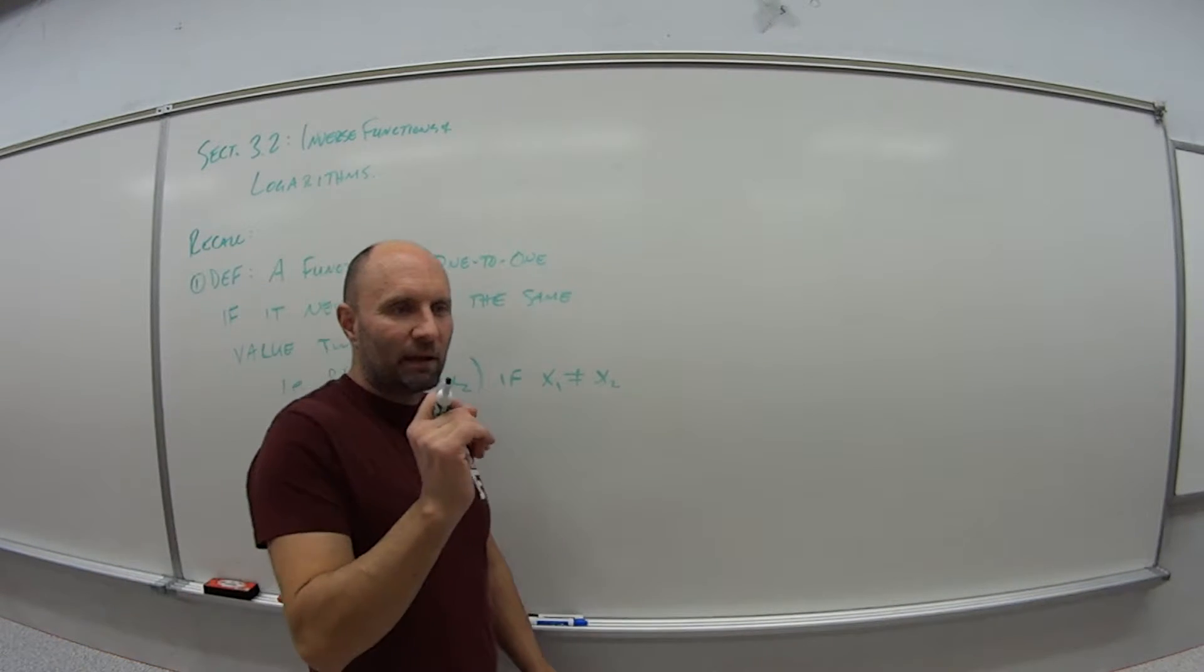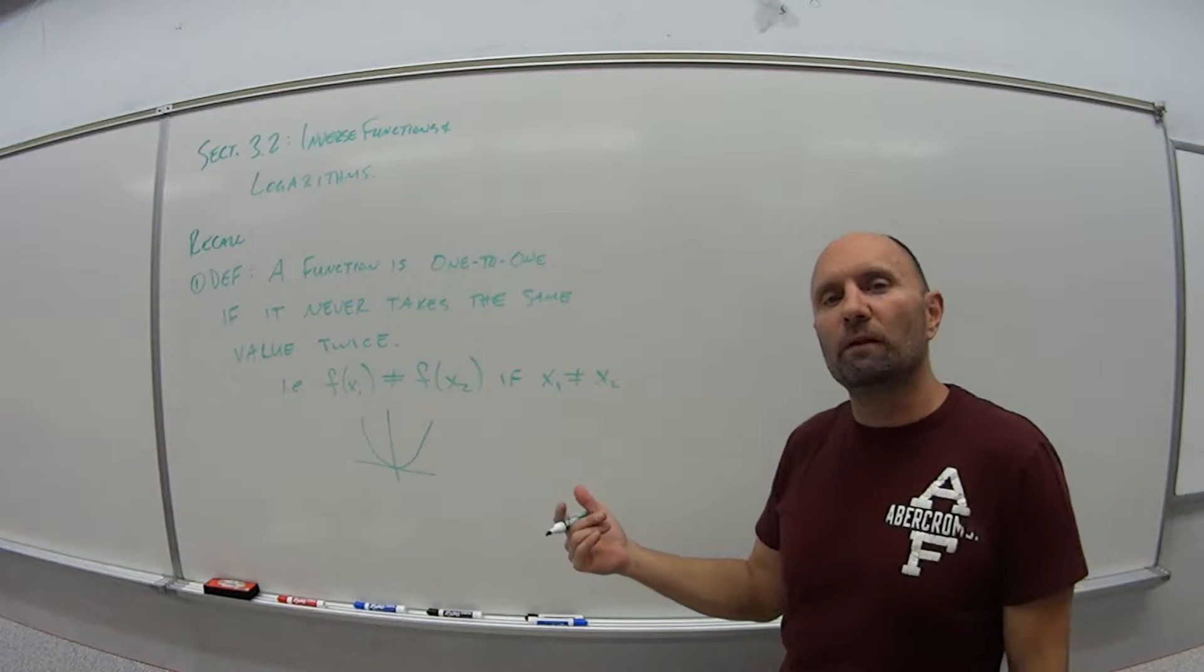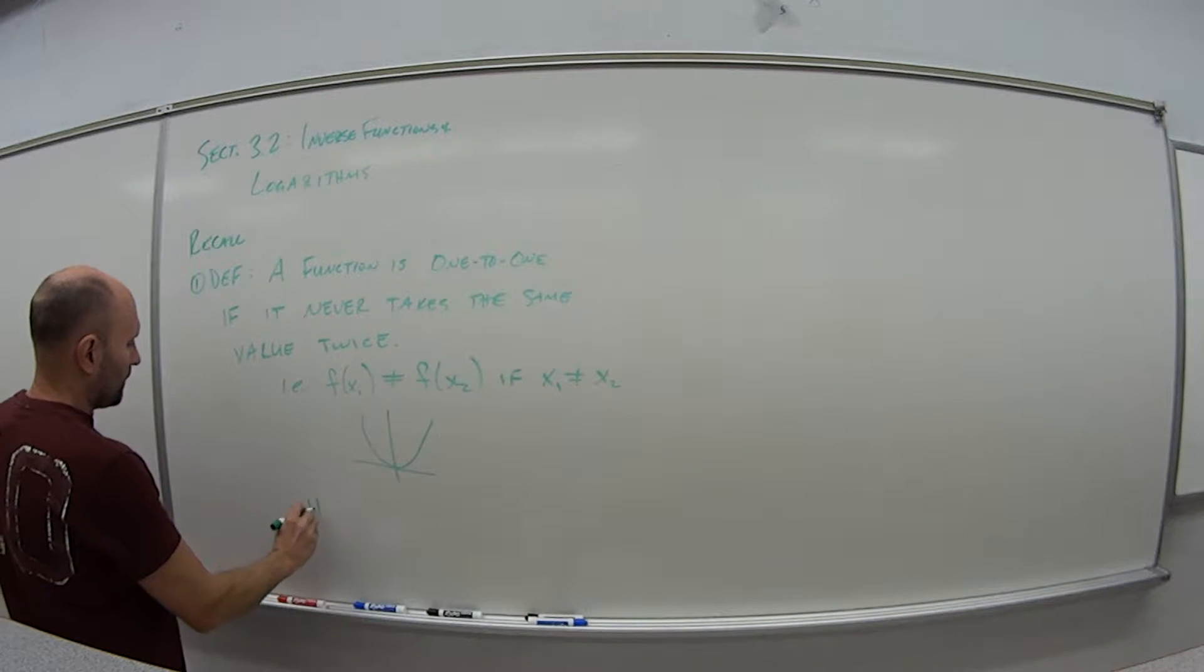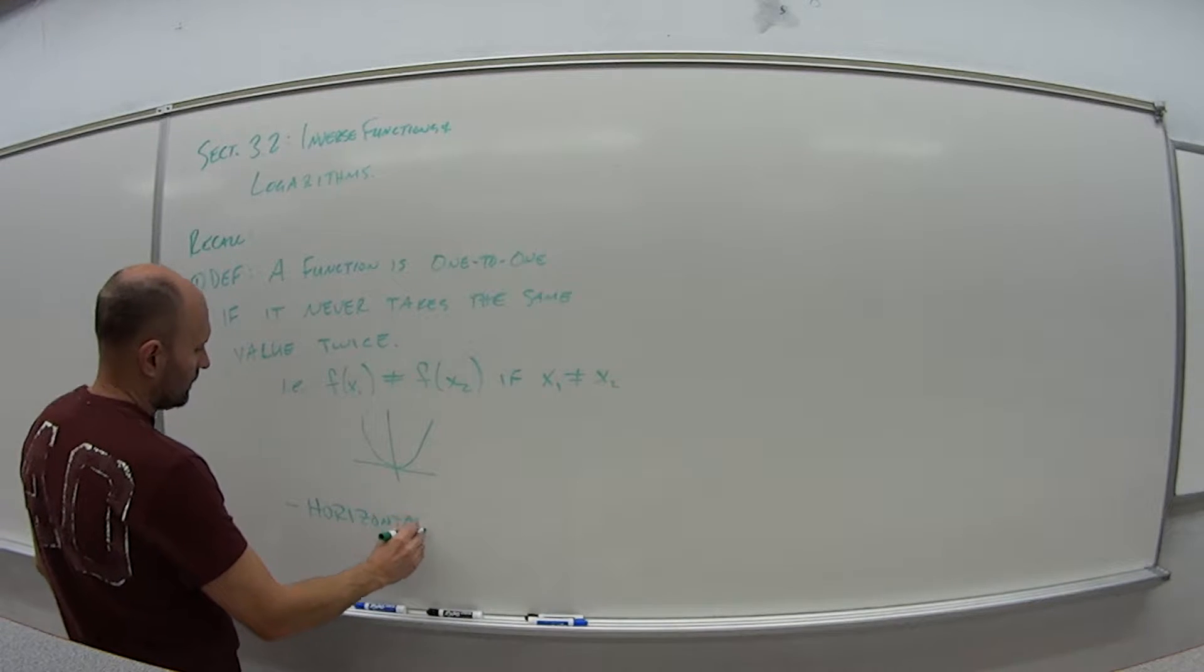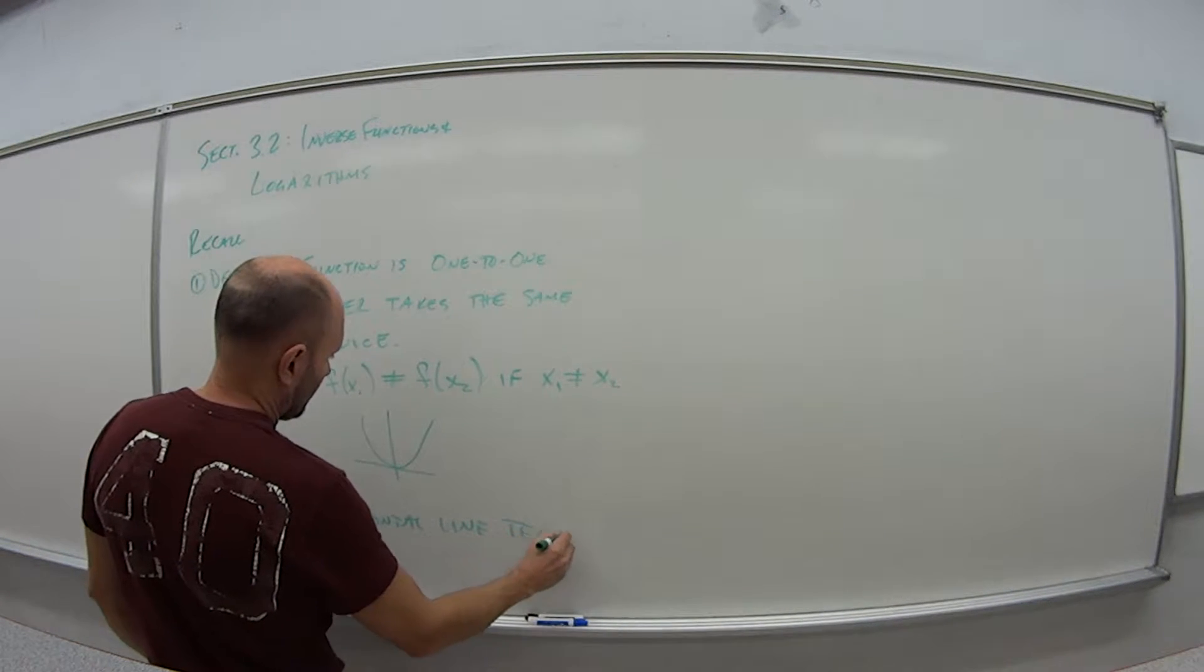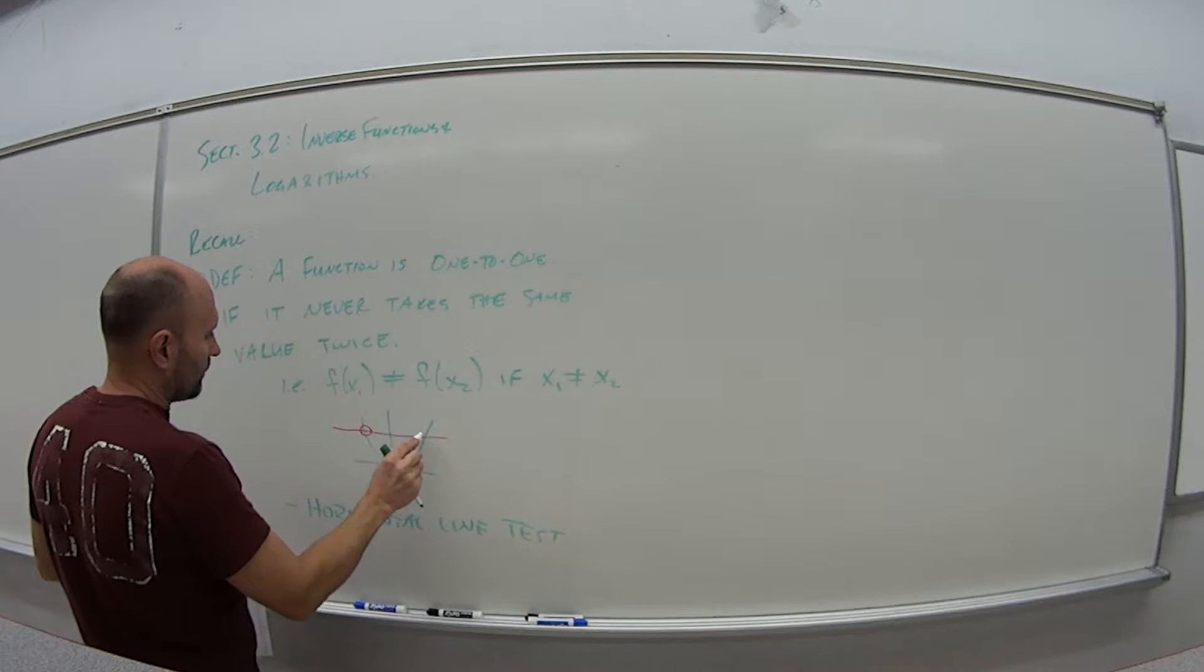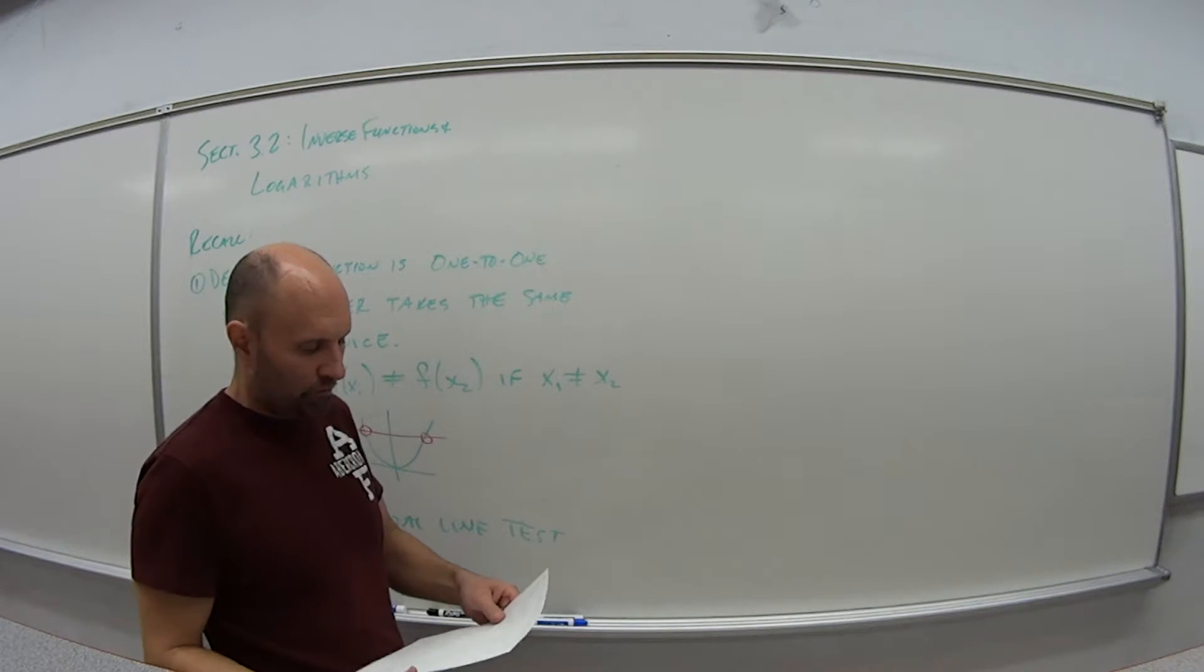If I'm given the graph of a function, how can I quickly determine if something is one to one? It's by the horizontal line test. If I can draw a horizontal line and I hit that graph more than once, it is not a one to one function.